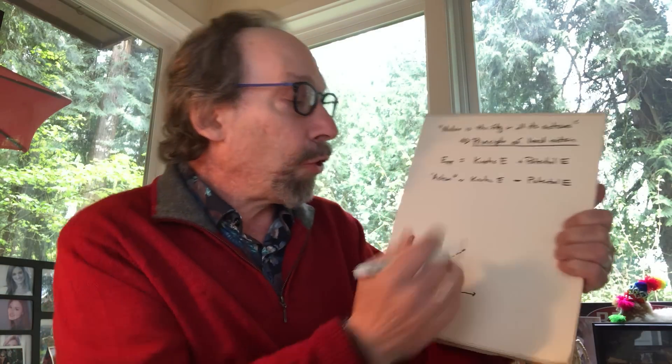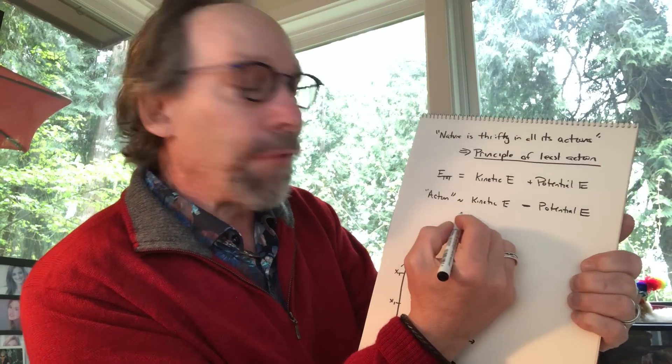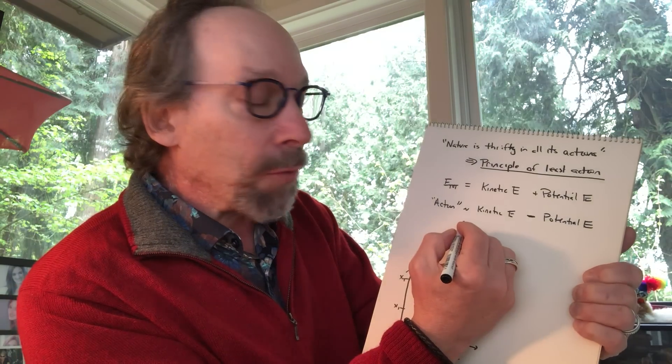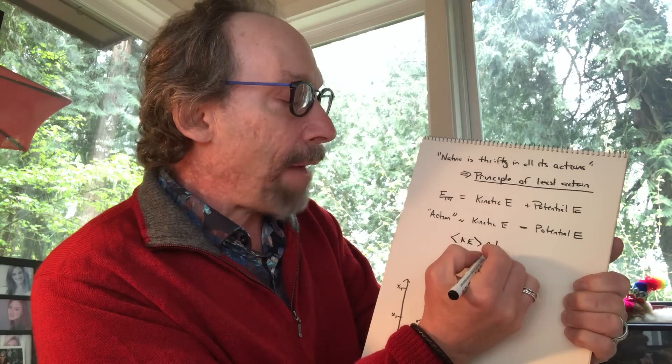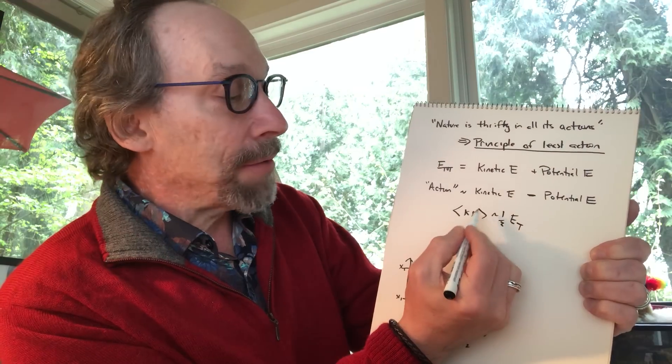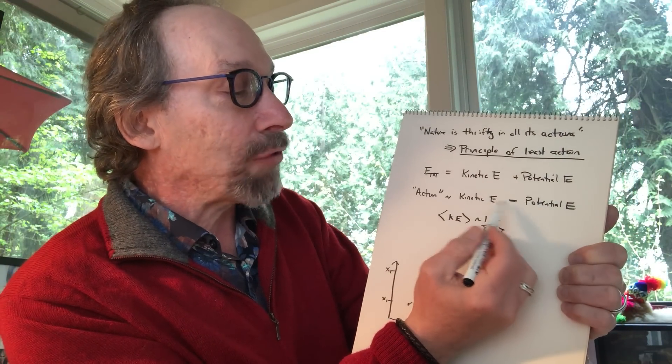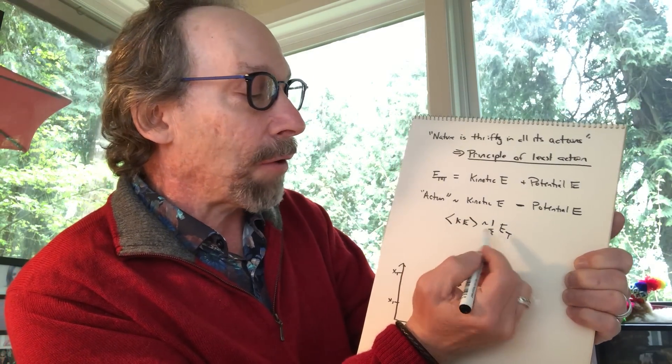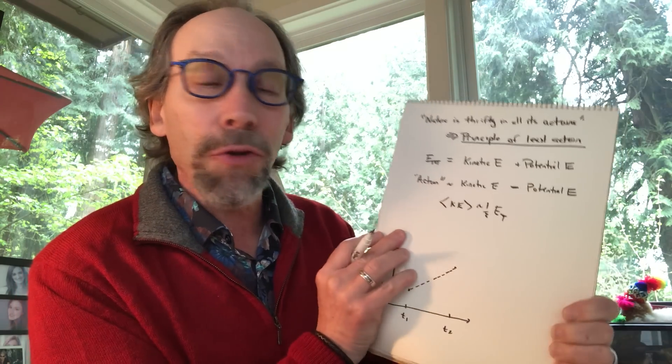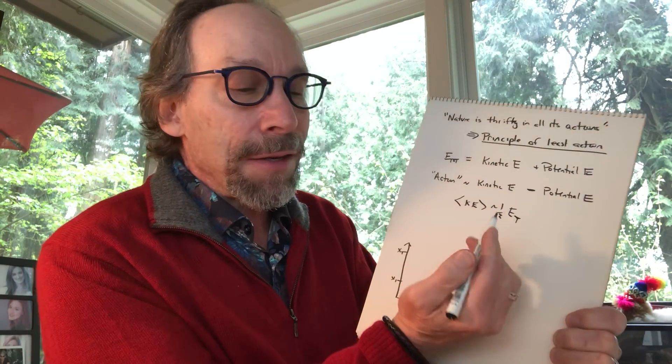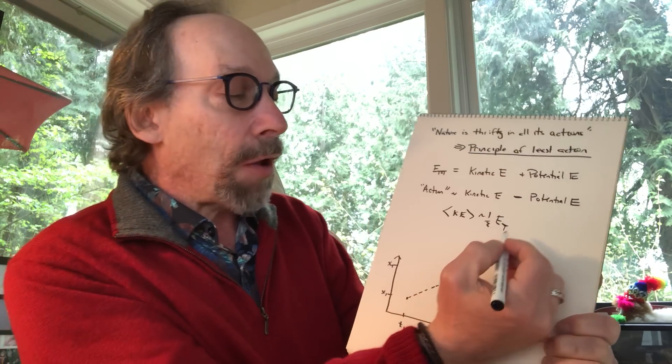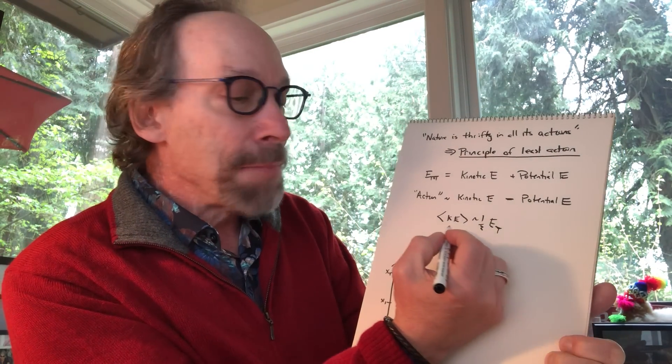For example, in thermal equilibrium, there's a theorem called the Virial Theorem, which says in thermal equilibrium, the average value of the kinetic energy of a system is one-half the total energy. That is nothing other than saying the kinetic energy and the potential energy are roughly equal, and the action is zero. So a system that's relaxed to thermal equilibrium in this way, by the Virial Theorem, has minimal total energy. Let's think of another stable system, an orbiting system.